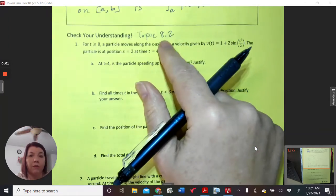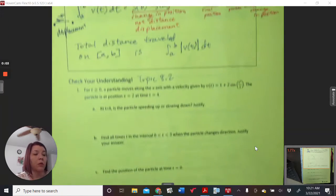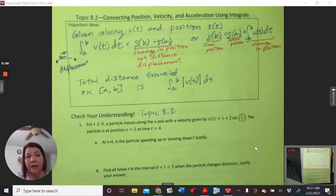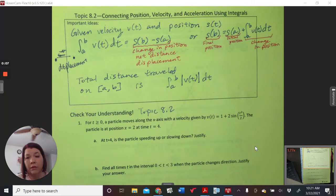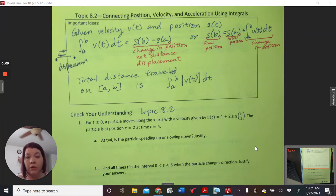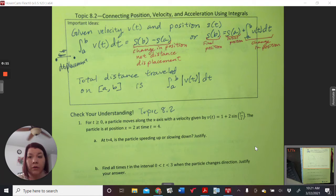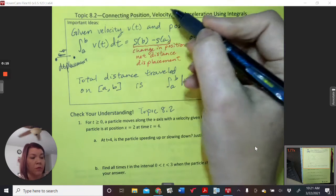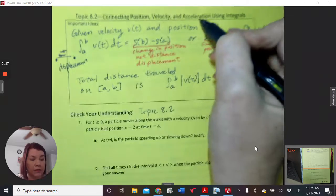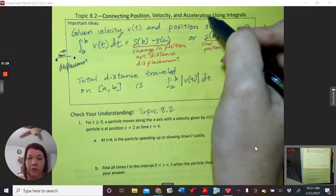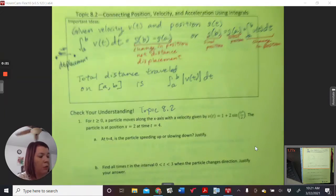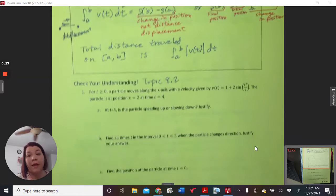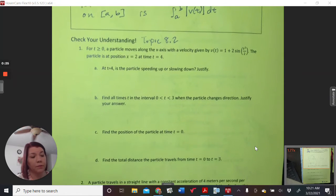Okay, so this is check your understanding for topic 8.2, which was connecting position, velocity, and acceleration using integration. So it's really important that we understand that. It's important that we understand acceleration, how they all fit in with the derivatives. The derivative position is velocity, derivative velocity is acceleration, the second derivative position is acceleration, all those things we need to remember that, which we've already learned. Now we're adding integration into the mix.